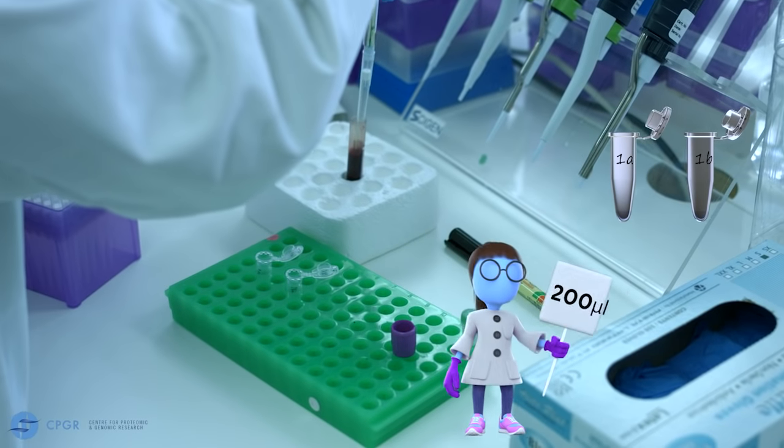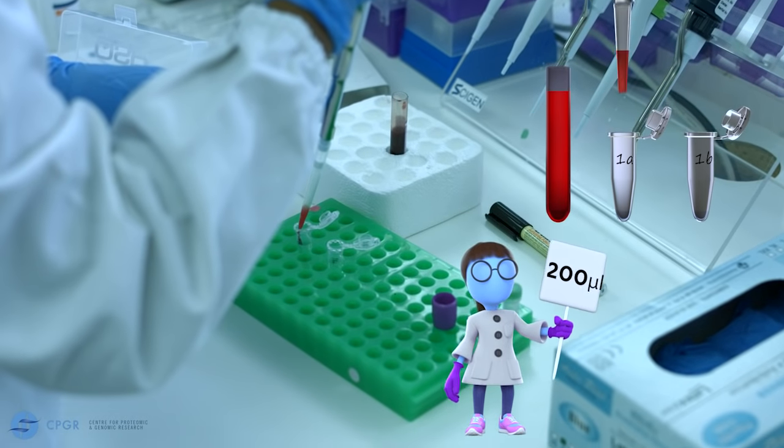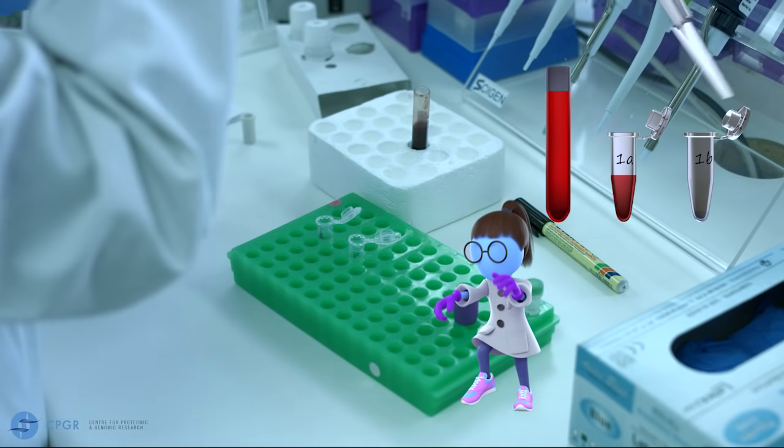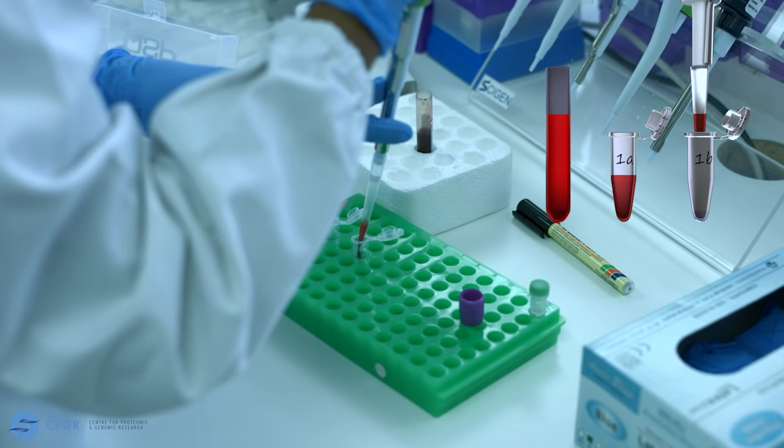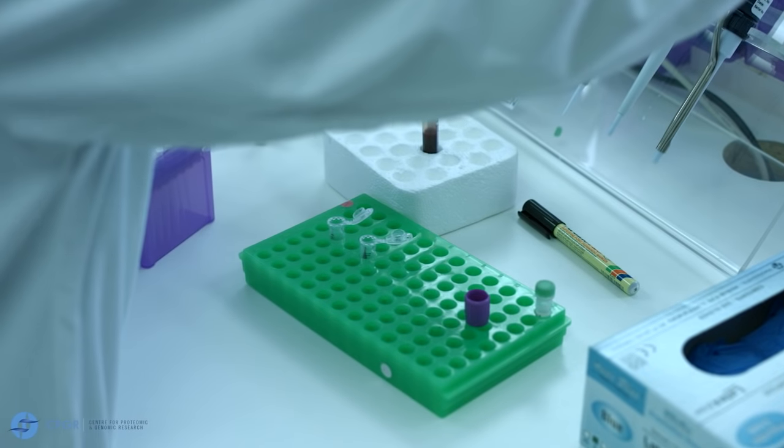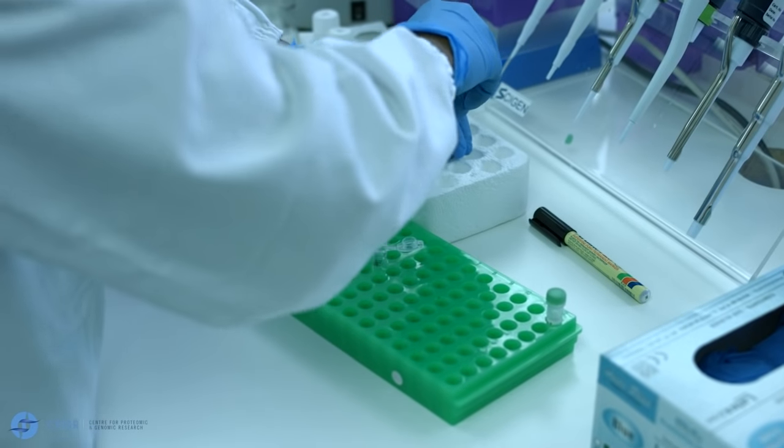Pipette 20 microliters of proteinase K into each microtube. Pipette 200 microliters of blood into each tube. Do this slowly as blood is viscous. Cap the blood sample and put to one side.